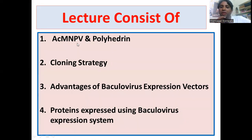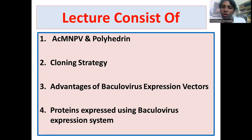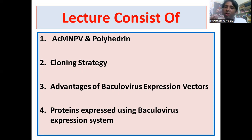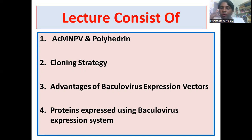Baculovirus means 'stick' — these are viruses with a rod shape. Autographa californica Multiple Nuclear Polyhedrosis Virus has a genome of 134 Kb and is a circular double-stranded duplex DNA. It is present in rod shape with a capsid and produces two types of virus particles upon infection: budded virus particles and occluded virus particles.